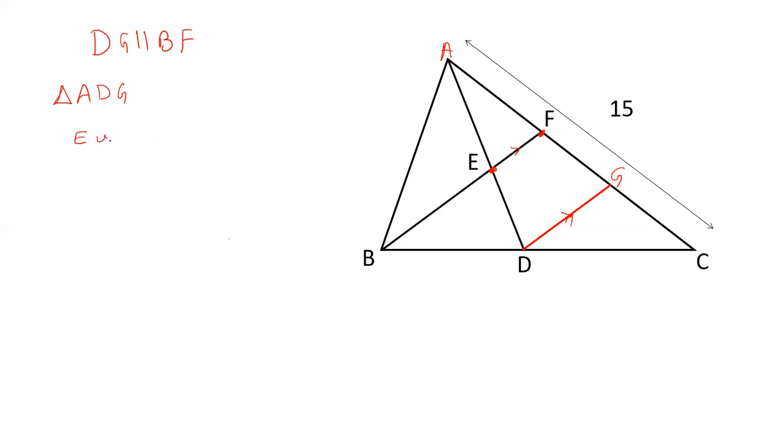So we know that E is midpoint of AD and EF is parallel to DG. So F is midpoint of AG.